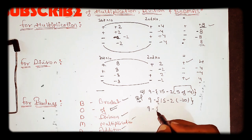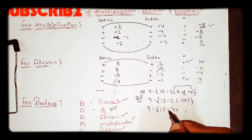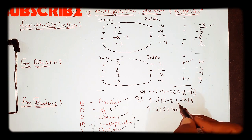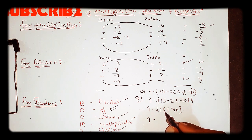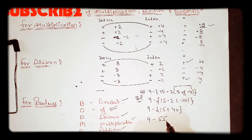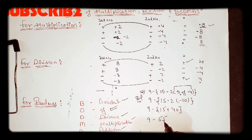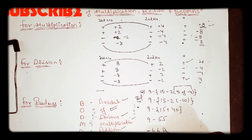So we have 9 minus, in bracket, 15 minus 20. Minus minus becomes plus, so inside the bracket it is 15 plus 20 equals 35 — wait, it resolves to 9 minus 40 plus 15, giving 55 minus 9 which equals minus 46. The final answer is minus 46.